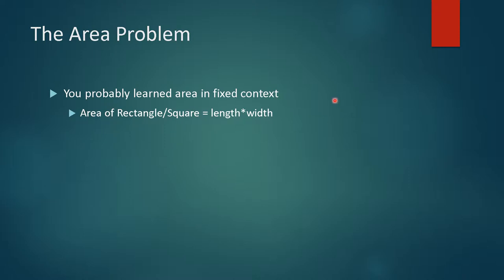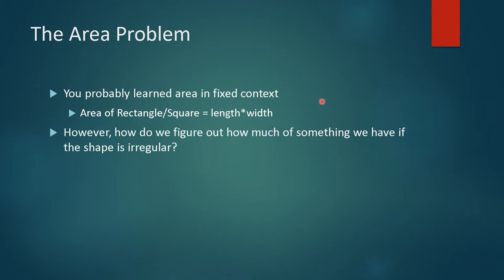So you've probably learned about area in some sort of fixed context, like say an area of a rectangle or a square, which is simply just its length times its width. However, you may not have learned where that came from or how to generalize the idea of what area is to other objects that may be not a rectangle or may not be a square or circle or triangle. Those are what we call Euclidean shapes, things that are very fixed, very easy to kind of define once we have some idea about them. So that comes into something called the area problem. How do we figure out how much of something we have area wise if a shape is irregular?